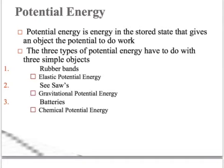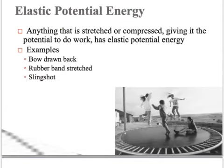There are three types of potential energy. Elastic potential energy applies to anything that is stretched or compressed, which gives it the potential to do work. A rubber band is an example for elastic potential energy, a seesaw for gravitational potential energy, and batteries for chemical potential energy. If you can stretch or compress an object, giving it the potential to do work, it has elastic potential energy.